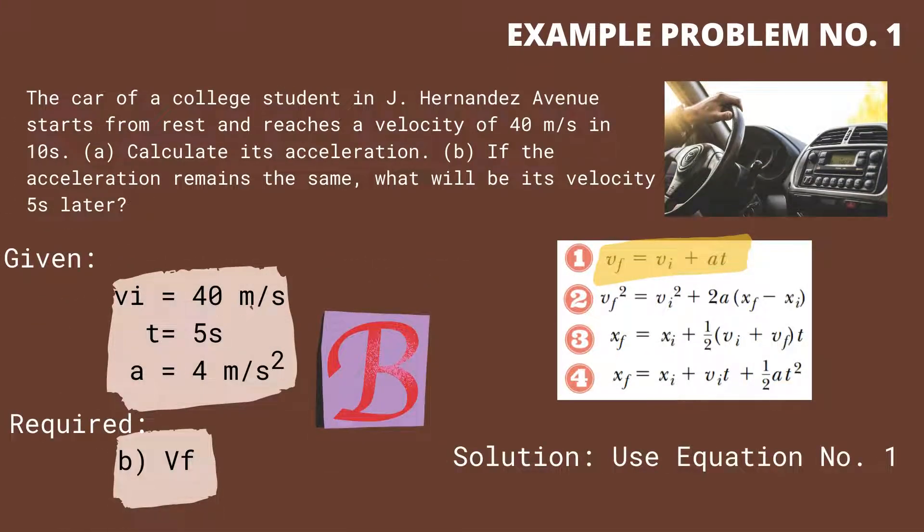Let us now solve the unknown quantity in letter (B). Here, the initial velocity equals 40 meters per second. t equals 5 seconds, and we will use the computed value for acceleration which equals 4 meters per second squared. The unknown is the final velocity, represented by v sub f.